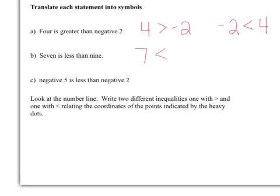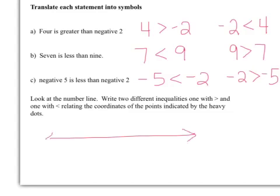Those mean the same thing. Negative five is less than negative two. I could also say negative two is greater than negative five. So let's look at a number line.